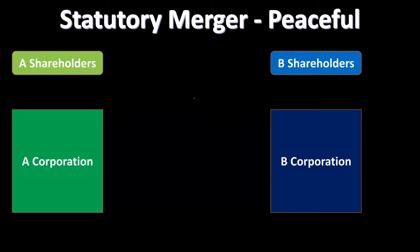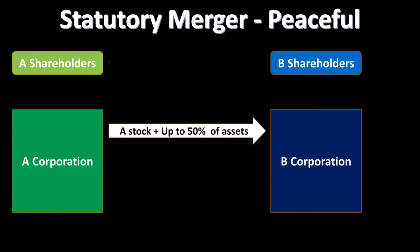In a statutory merger — the peaceful version — we have A shareholders owning corporation A, and B shareholders owning corporation B. The shareholders vote on the board of directors, and management makes the day-to-day decisions. If you have more than 51% of the shares of an entity, you have complete say on who is management, which gives a lot of influence on what happens in the organization.